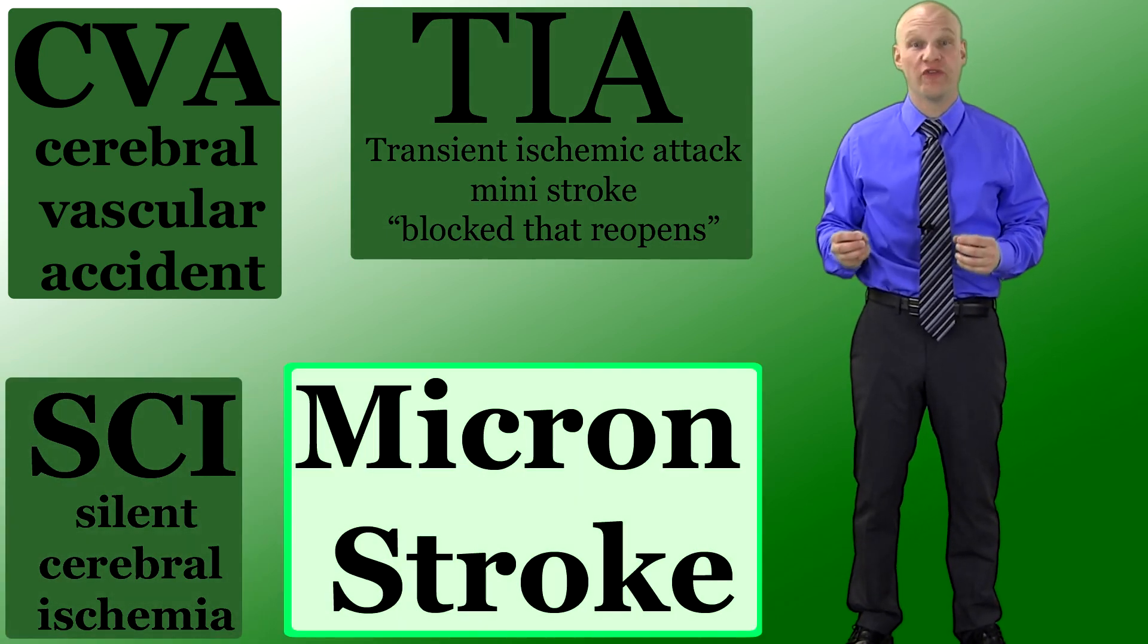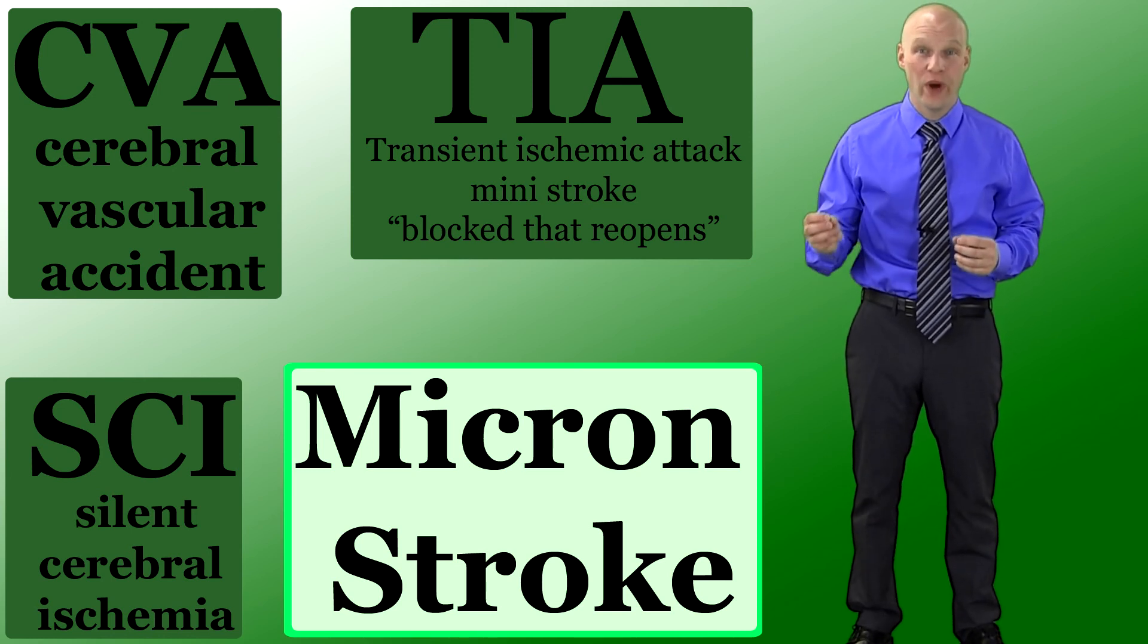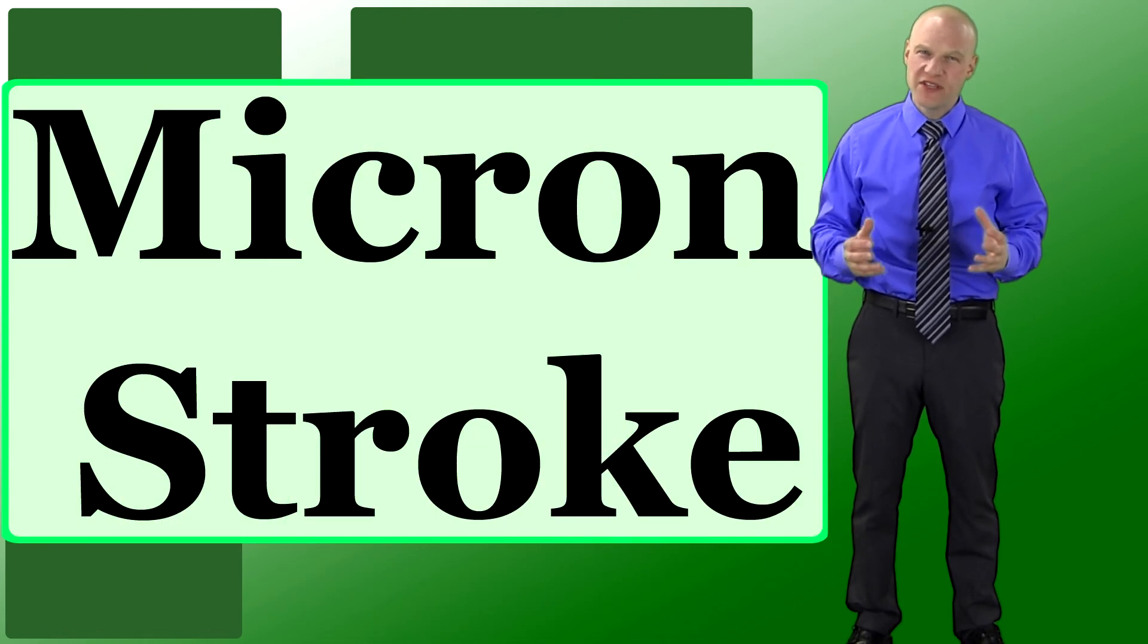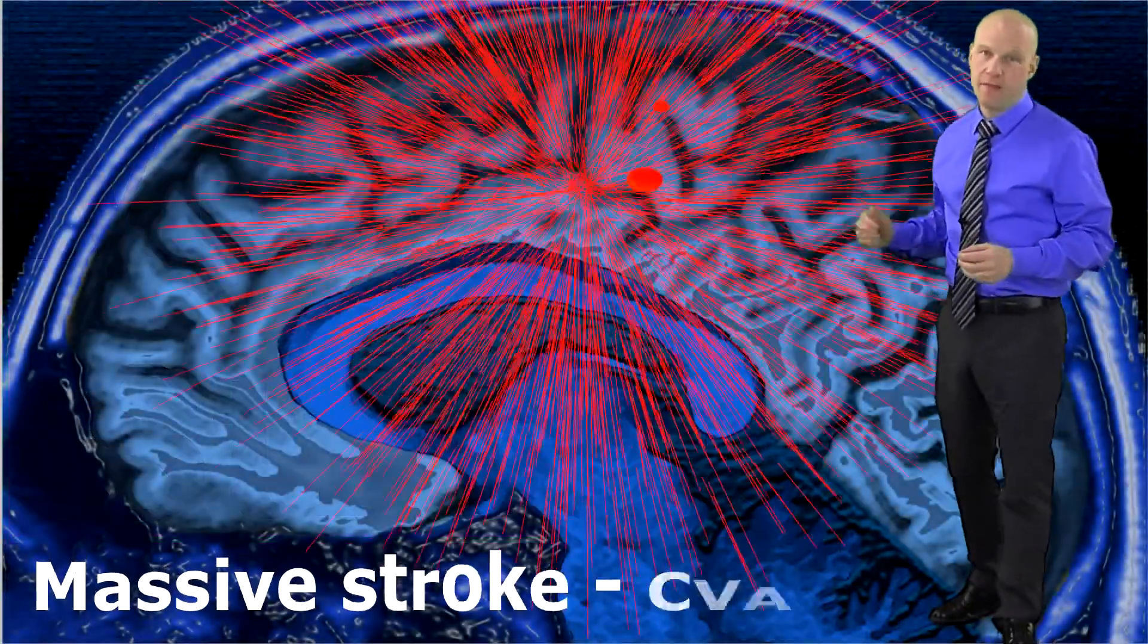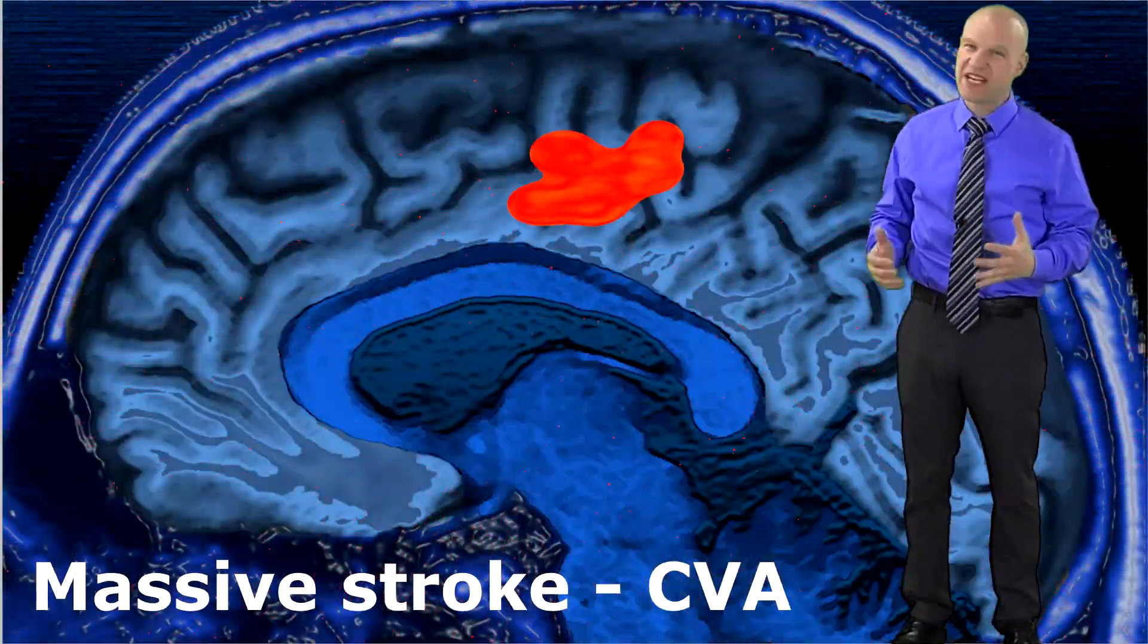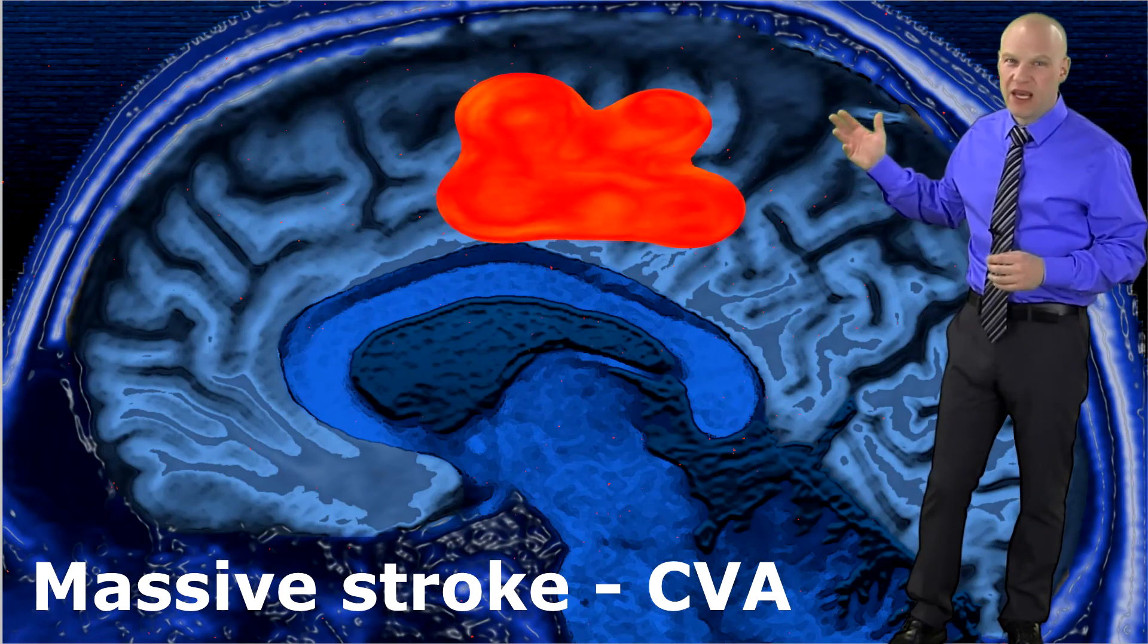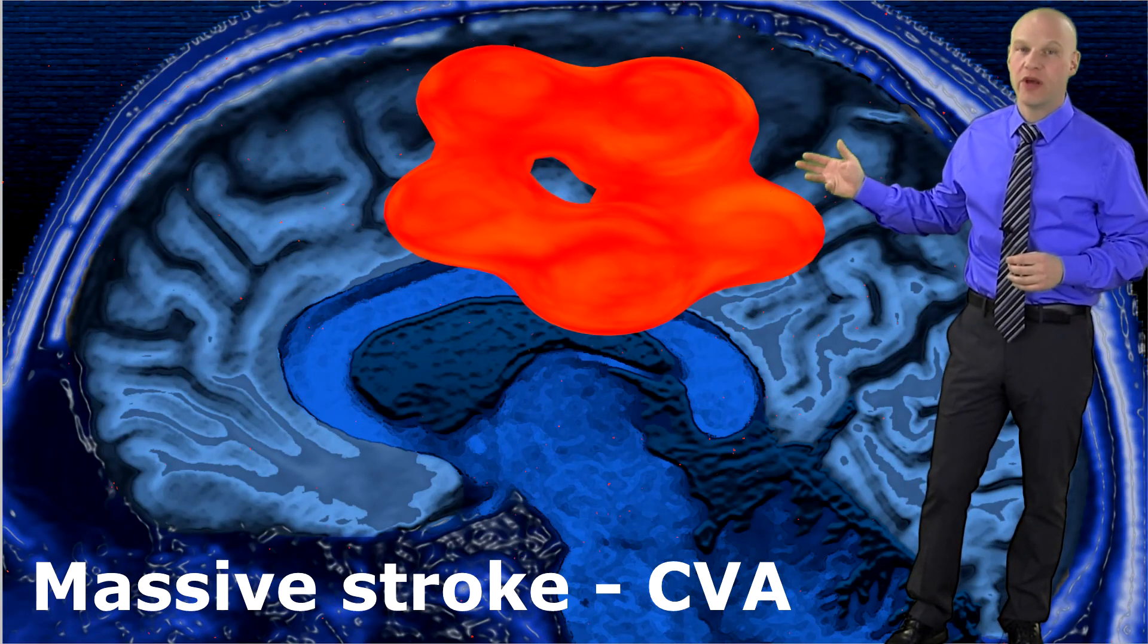What I'm going to be reviewing today is a fourth and very exciting way that your brain can be damaged, and this is my term, the Micron Stroke. First, let us take a look at massive stroke. This is a massive amount of damage to the brain in any way or form that it could happen.